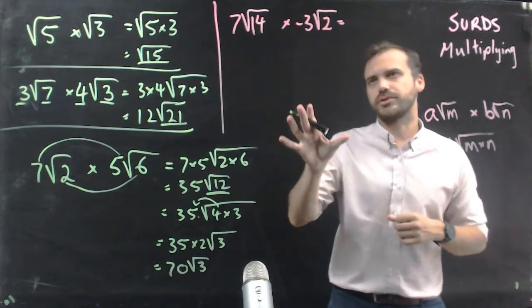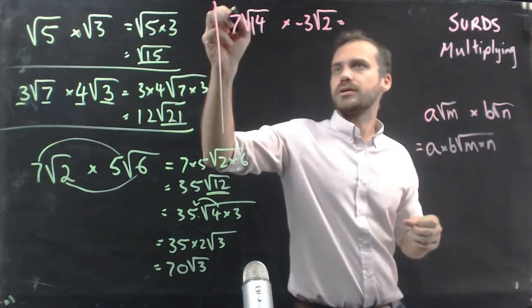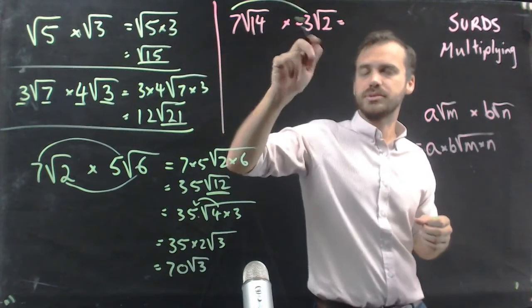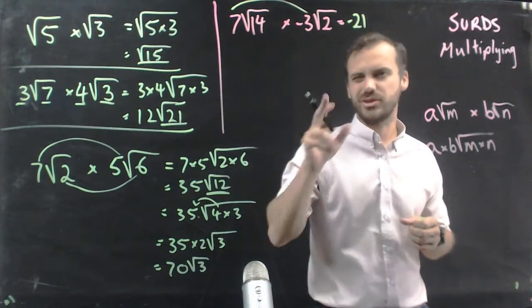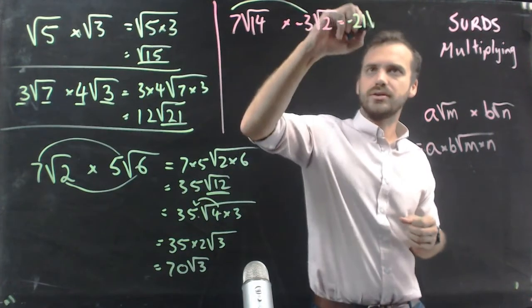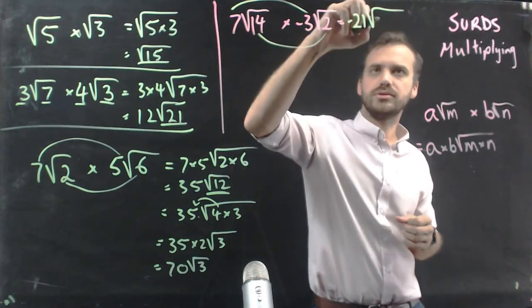Okay, last one. I just wanted to go through this. There's a negative number in here. That's the only difference. 7 and negative 3. 7 times negative 3 makes negative 21. I'm just going to skip that first line there. You shouldn't do that. And the insides, 14 times 2, 28.